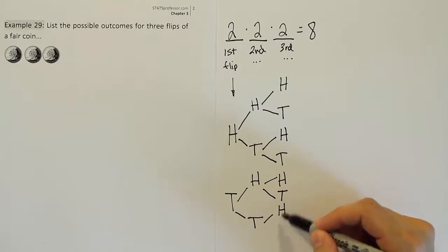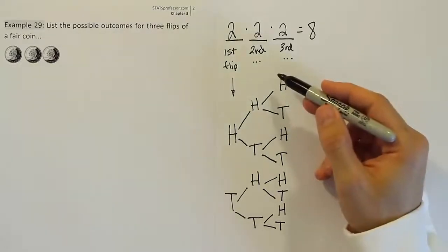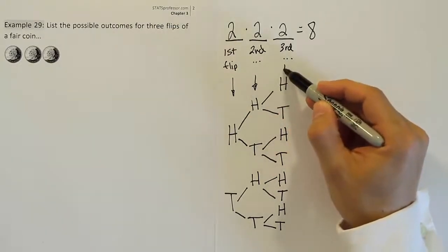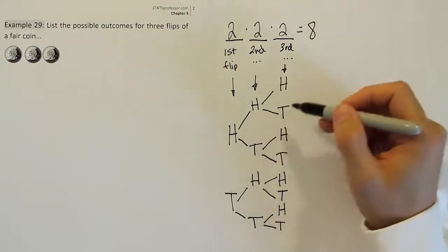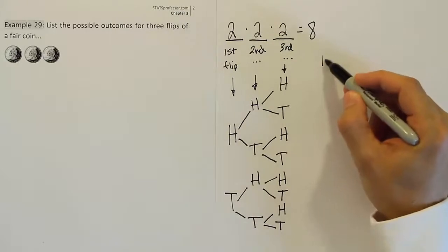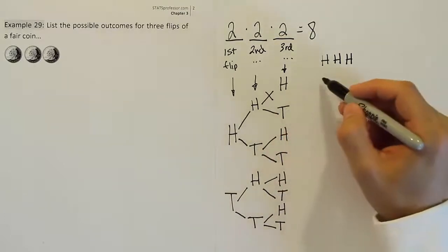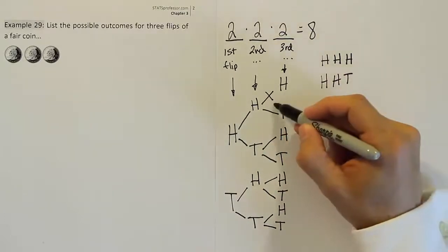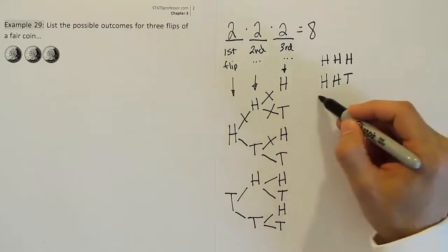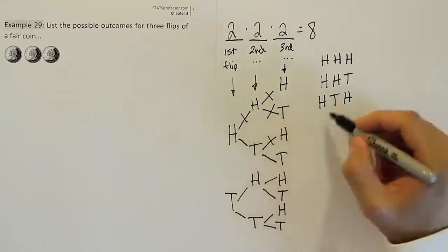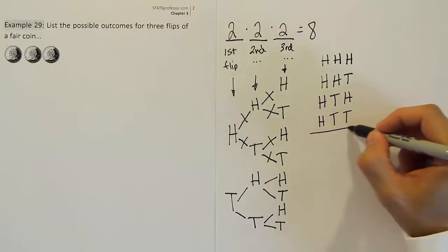That's the list of possible outcomes — this column represents the second flip and this one represents the third flip. Now we list the outcomes by following the different branches of the tree. Following the branches: heads, heads, heads — that's one possible outcome, three heads. Then heads, heads, tails. Then heads, tails, heads. Then heads, tails, tails. There are our first four possible outcomes.